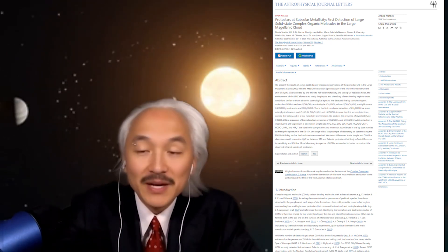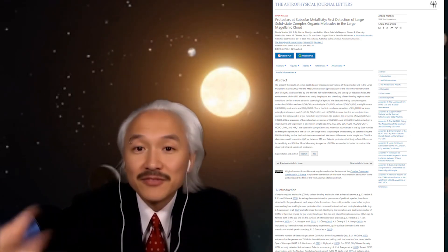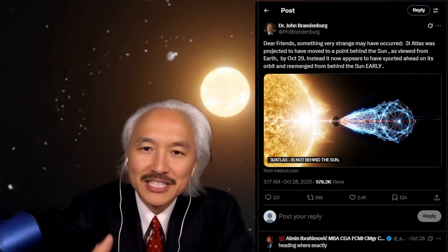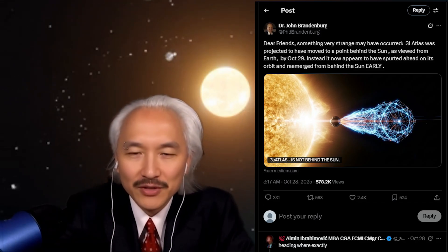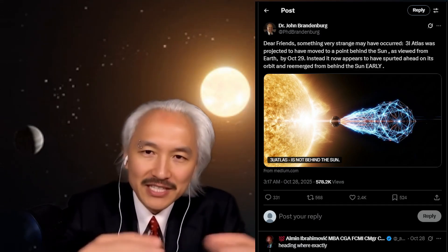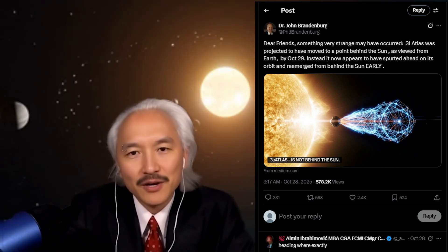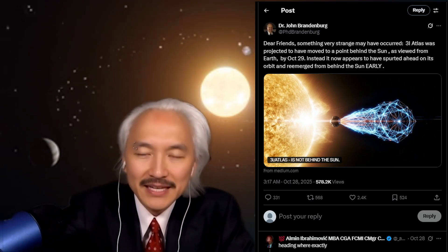Now let's get to the controversy. I always like to show my sources, the studies here. It will be in the description for you to read and click. There's a post that came out saying: Dear friends, something very curious may have happened. The projection indicated that 3i Atlas should move to a point behind the sun as seen from Earth on October 29th, today. However, it appears to have advanced in its orbit and reemerged from the solar glare earlier than we expected.